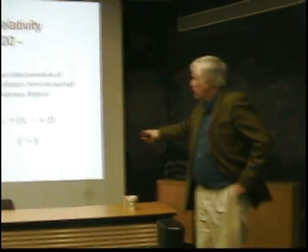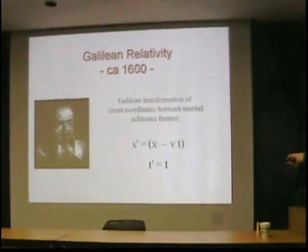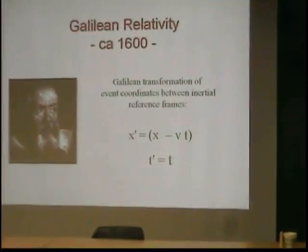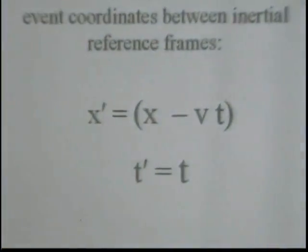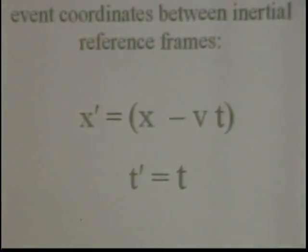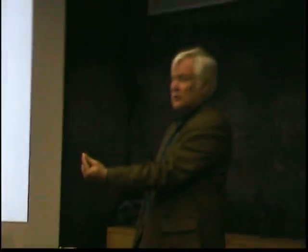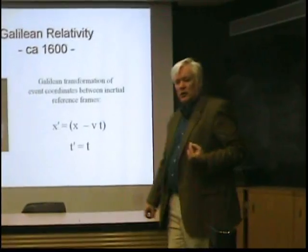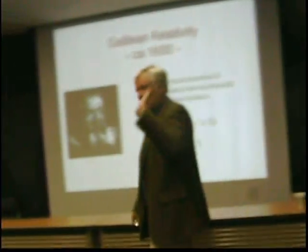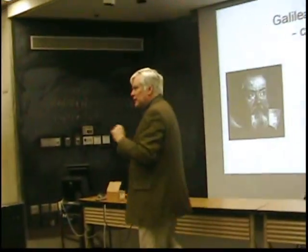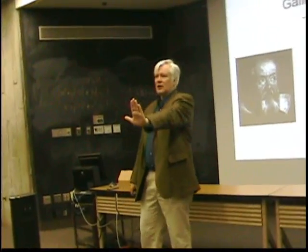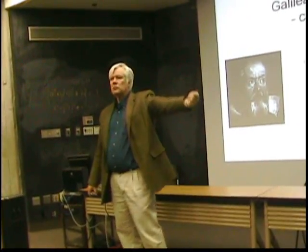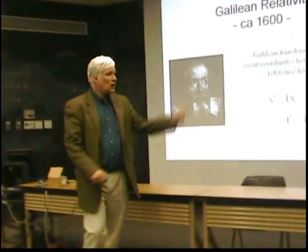My value is his value minus my velocity times time. If I'm sitting at rest, my x prime coordinate for that thing is fixed — x prime just equals x. But if I start moving, it starts changing. So I see a tree outside the railroad car window: for the person not on the train, the tree is sitting still. For me, the tree appears to be moving. That's all that says.